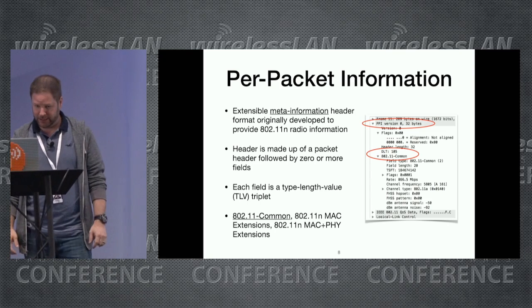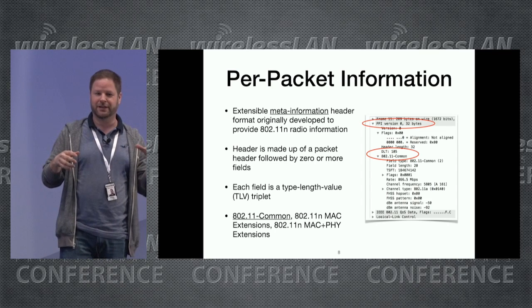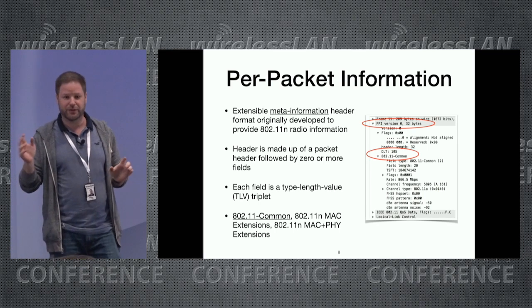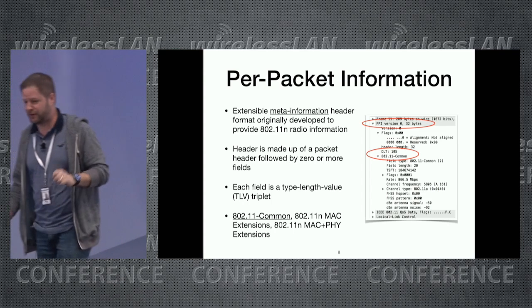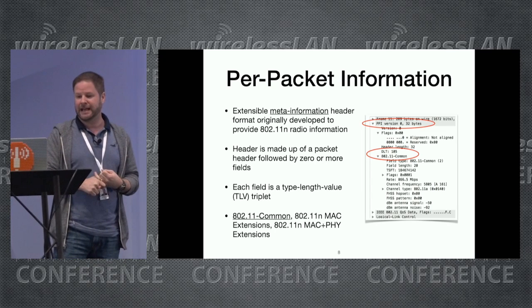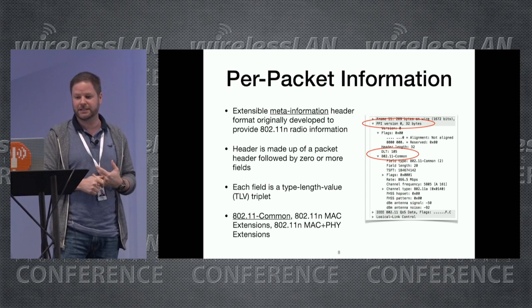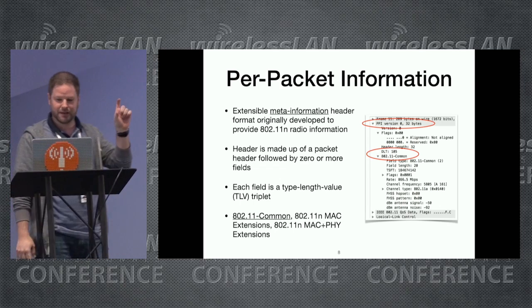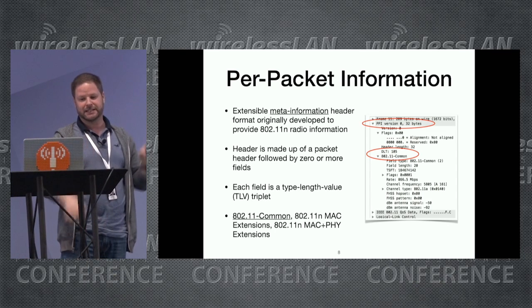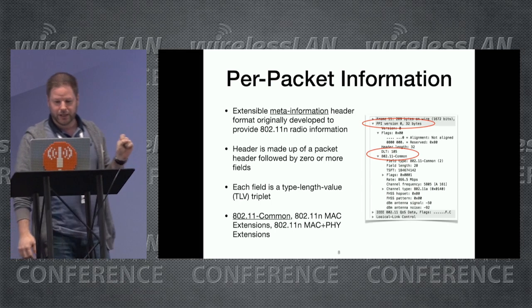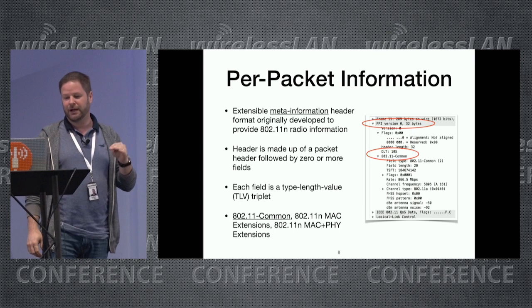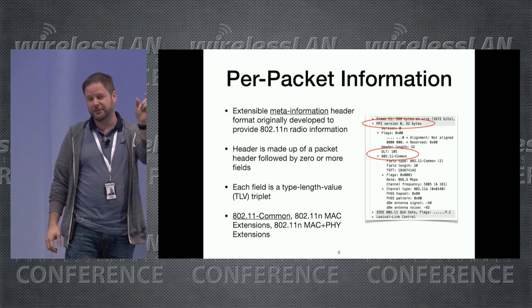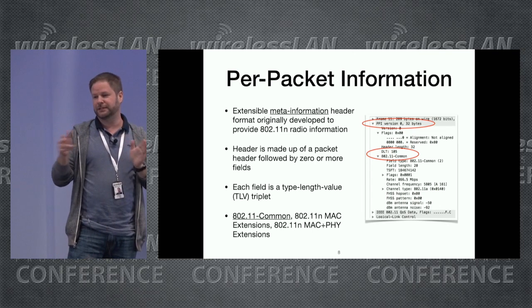Per packet information (PPI) is kind of a header inside a header. This format is not only for Wi-Fi — the driver can use it to insert whatever they want. But there are some specific Wi-Fi headers: 802.11 common, 802.11n MAC extensions, and 802.11n MAC plus PHY extensions. When you see this header, you first get the PPI header and then a specialized header, for example 802.11 common. Each field is defined as a type-length-value (TLV) — the same format you see for information elements in a beacon. You get one byte for the type, one byte for the length, and then the payload.